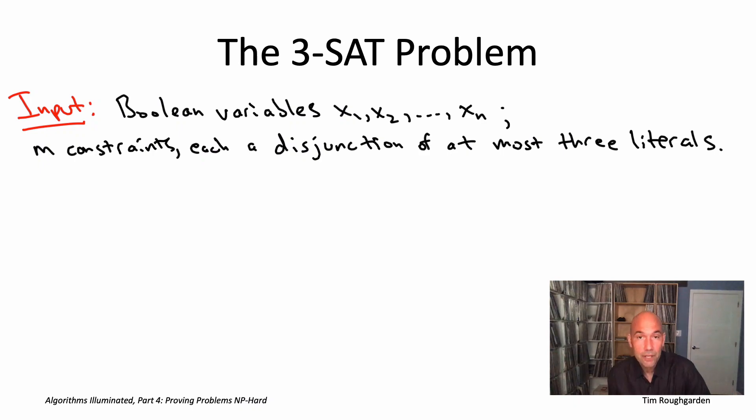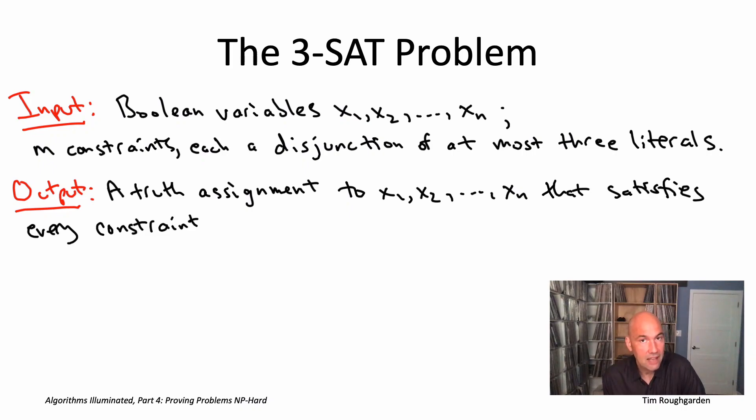The goal then is exactly what you'd expect. Out of these 2 to the n possible truth assignments, we're curious whether any of them satisfy simultaneously all of the constraints, all of the disjunctions of at most three literals. If there's no such assignment, we'd like an algorithm to report that fact. If there is a satisfying truth assignment, we would like an algorithm that returns one to us.